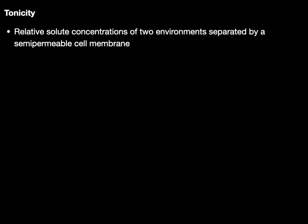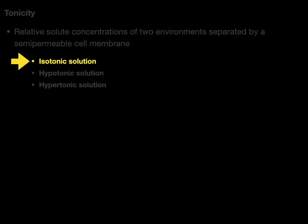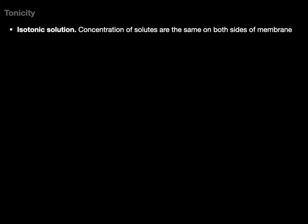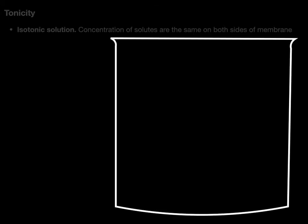Now let's talk about tonicity, which refers to the relative solute concentrations of two different environments separated by a semi-permeable cell membrane. There are three things we're going to talk about with tonicity. Let's start with an isotonic solution — an isotonic solution is where the concentration of solutes are the same on both sides of the membrane.